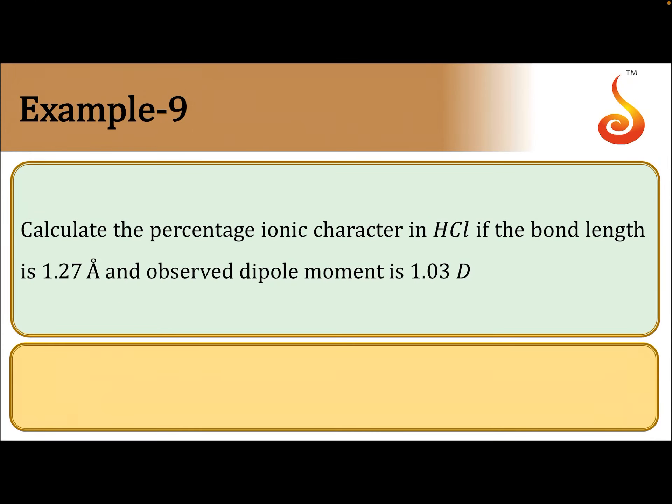Calculate the percentage ionic character in HCl if the bond length is 1.27 angstrom units and observed dipole moment is 1.03 Debye.